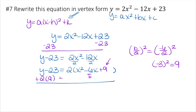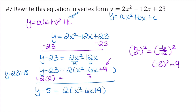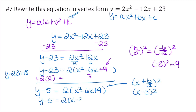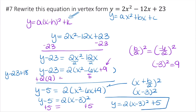Simplifying the left side: y minus 23 plus 18 gives y minus 5. The right side becomes 2 times x squared minus 6x plus 9, which is the perfect square trinomial 2 times x minus 3 squared. So y minus 5 equals 2 times x minus 3 squared. Adding 5 to both sides gives the final vertex form: y equals 2 times x minus 3 squared plus 5.